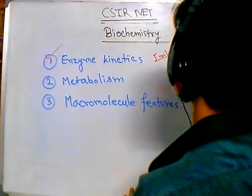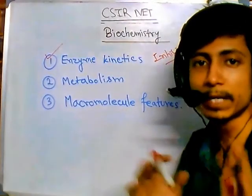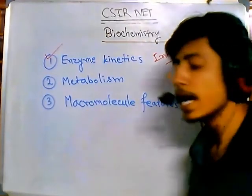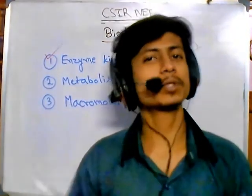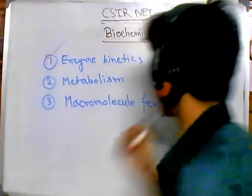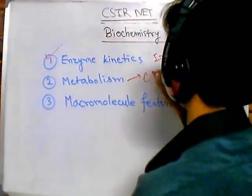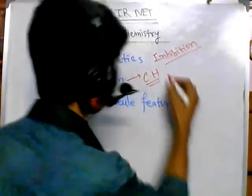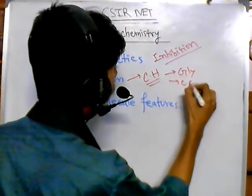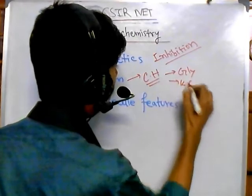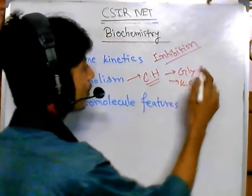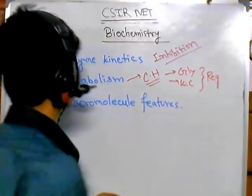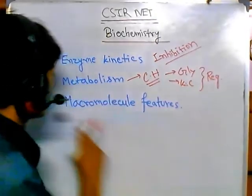Enzyme inhibition with real examples from metabolic pathways will help you. The second thing is metabolism. From metabolism, carbohydrate metabolism is the most important part — specifically glycolysis and the Krebs cycle. The regulation of glycolysis and the Krebs cycle is very very important.